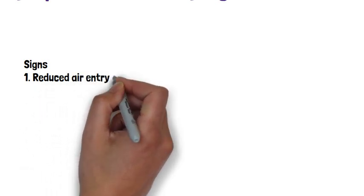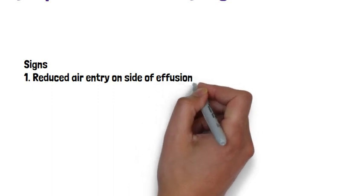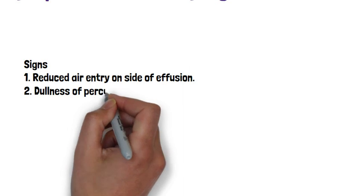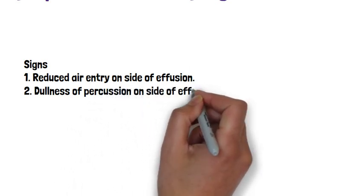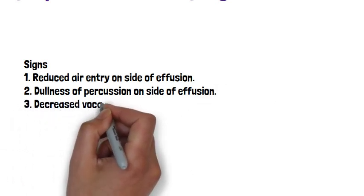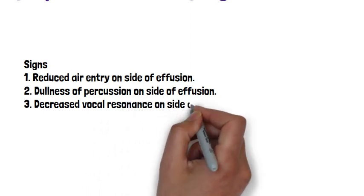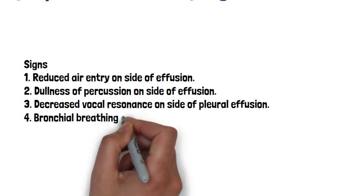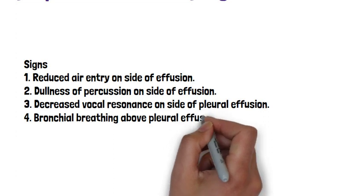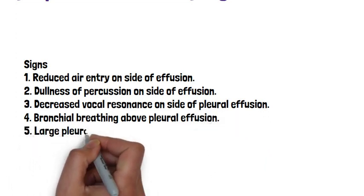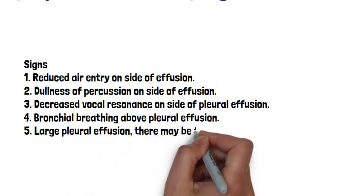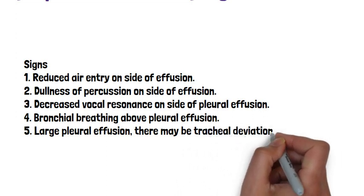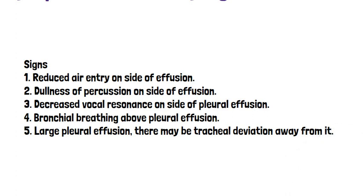So when you go to examine a patient with a pleural effusion, you may be able to elicit and see certain signs. So generally, patients with pleural effusions will have a reduced chest expansion on the side of the effusion. They will also have reduced air entry on the side of the pleural effusion. And when you percuss over the chest on the side of pleural effusion, you will get a dull note or classically a stony dull note. And this is the most reliable sign you can elicit. You'll get decreased vocal resonance on the side of the pleural effusion. And sometimes there may even be bronchial breathing above the pleural effusion. And if a pleural effusion is very large, there may be tracheal deviation away from it.